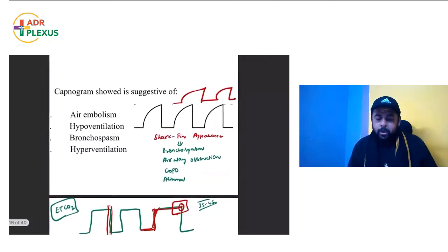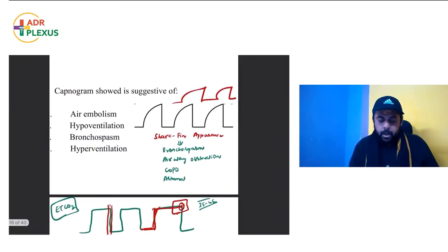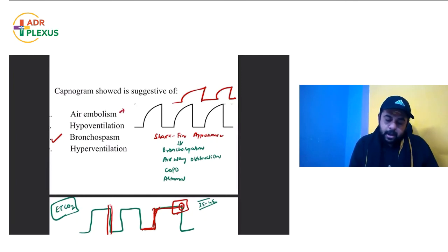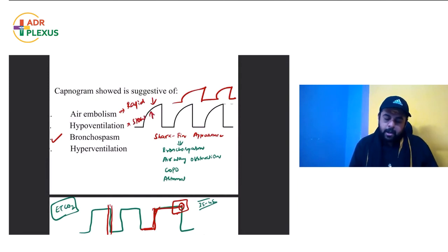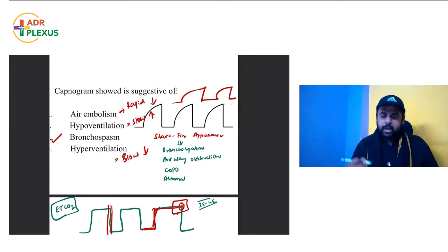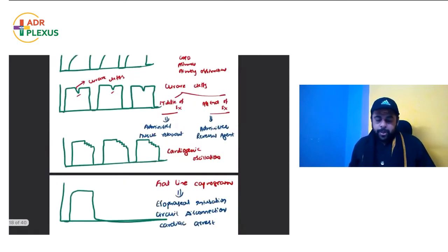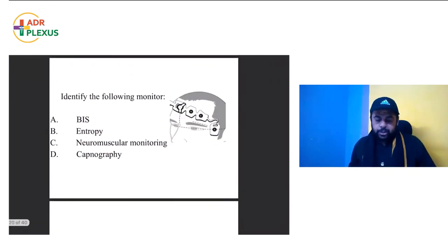To summarize capnogram patterns: bronchospasm shows shark fin appearance; pulmonary embolism shows rapid decrease; hypoventilation shows slow increase; hyperventilation shows slow decrease in ETCO2. These are all very important capnography patterns to remember.